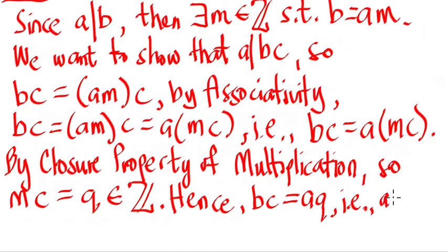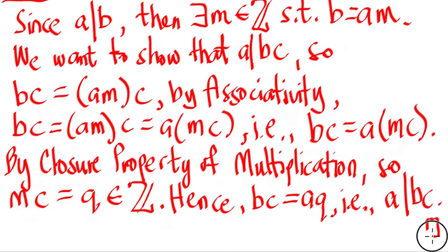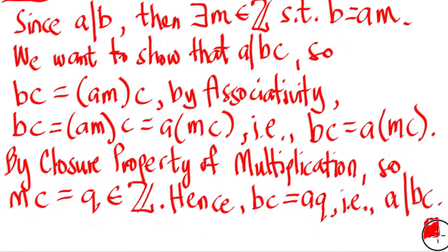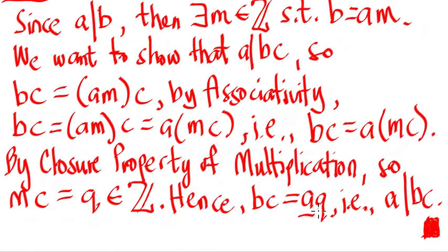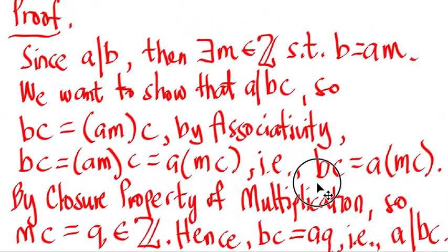Hence a divides b·c, which is exactly what we wanted to prove. This shows that a is a factor of b·c because a multiplied by the integer q gives us b·c.